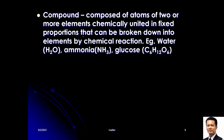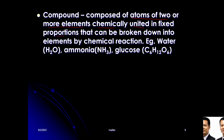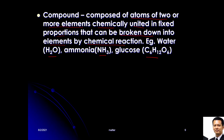What about compound? A compound is composed of atoms of two or more elements chemically united or bonded in fixed proportion. Examples are H₂O, NH₃, and glucose. These can be broken down into elements by chemical reaction — for example, water can be separated using electrolysis.